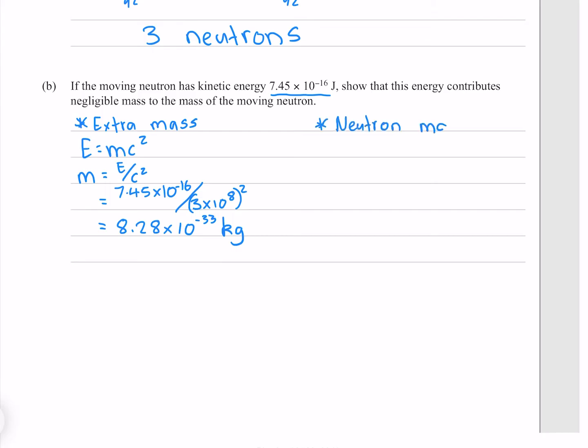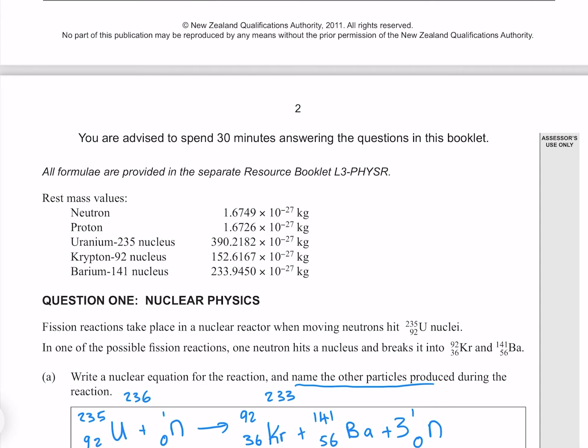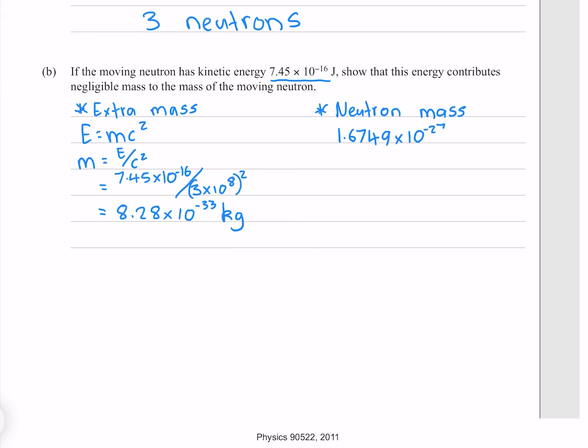Our neutron mass is given above, 1.6749 times 10 to the minus 27. So we can see that the extra mass is around a million times smaller than the neutron mass, so is negligible.